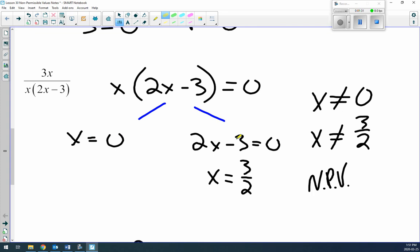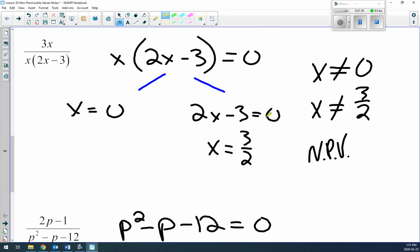So first, x equals zero. That one's easy. And 2x-3 equals zero. This one you just rearrange: move the 3 to the other side and divide by 2. So x cannot equal zero and x cannot equal 3/2. Those are both non-permissible values. So in this case, two of them.